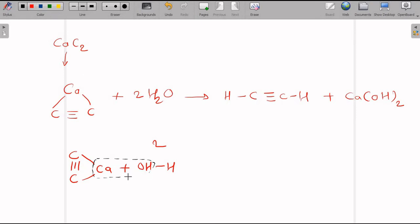So, this compound is going to rupture to form calcium hydroxide, that is Ca(OH)2, as a by-product, and two hydrogen atoms are going to join with these two carbon atoms.